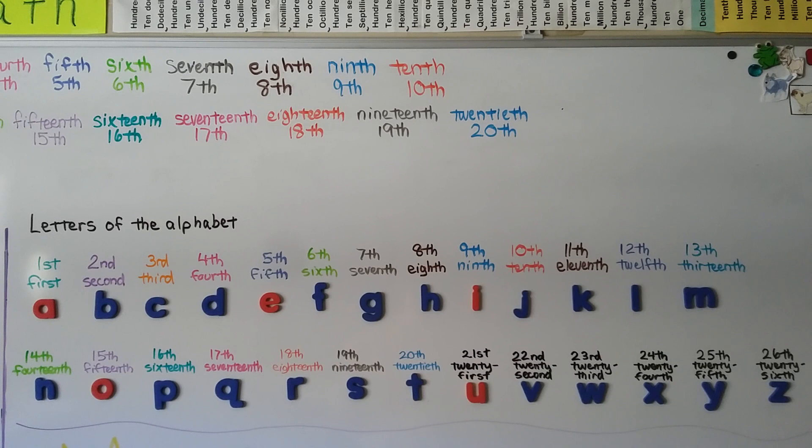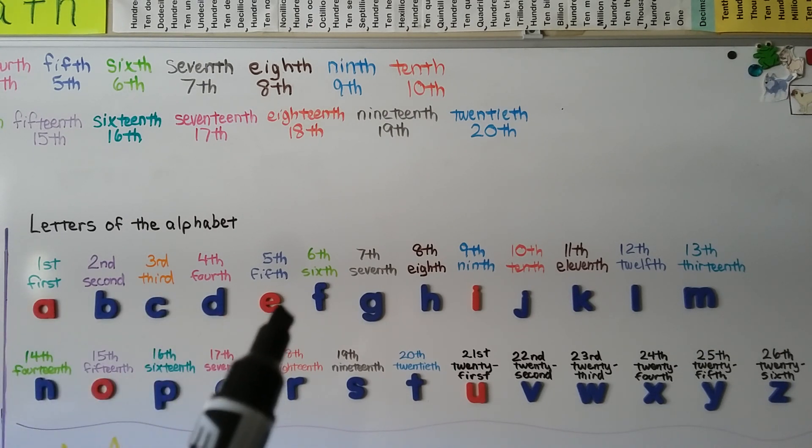We can find an ordinal number for a letter of the alphabet. What ordinal number is the letter E? It's the fifth letter of the alphabet.